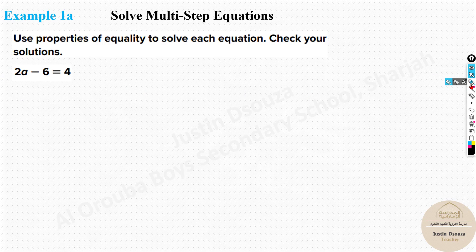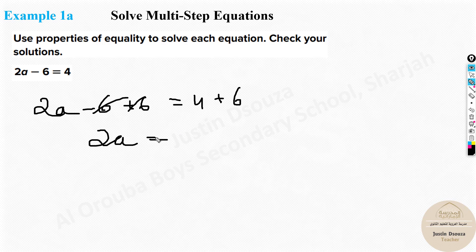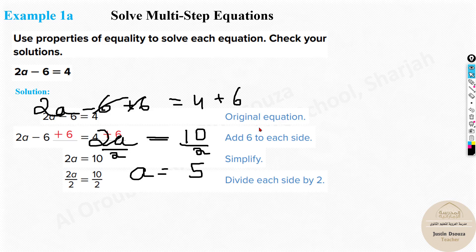Here is a problem: 2a - 6 = 4. In the last lesson it was just a - 6 = 4, but now first you need to add 6 on both sides. It becomes 2a - 6 + 6 = 4 + 6. The 6s cancel, giving 2a = 10. Then divide both sides by 2, and the answer is a = 5.